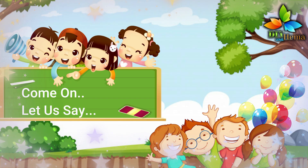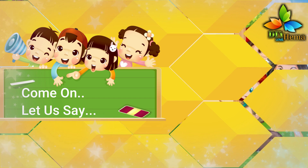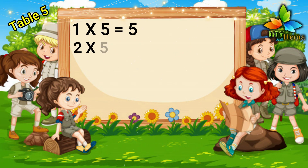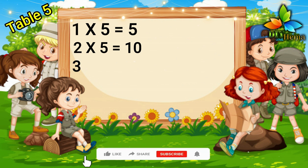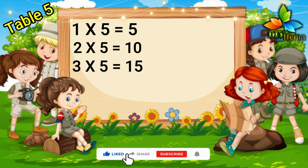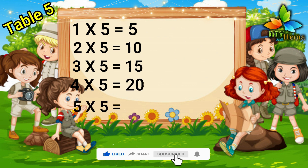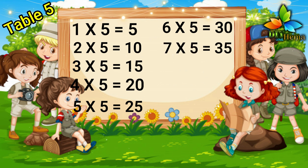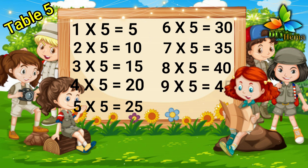Come on cookies, let us say. One five is five. Two fives are ten. Three fives are fifteen. Four fives are twenty. Five fives are twenty-five. Six fives are thirty. Seven fives are thirty-five. Eight fives are forty. Nine fives are forty-five. Ten fives are fifty.